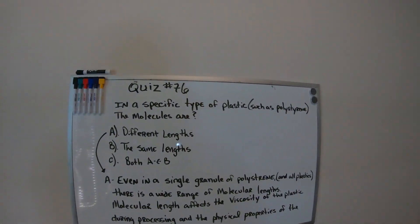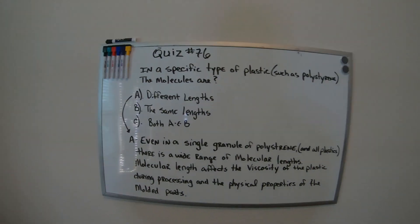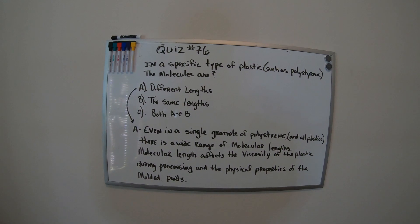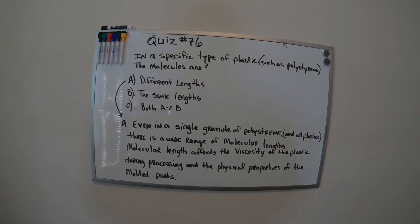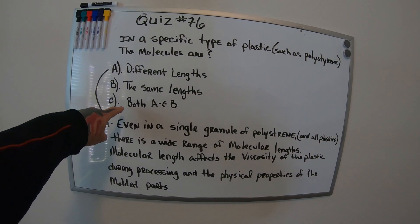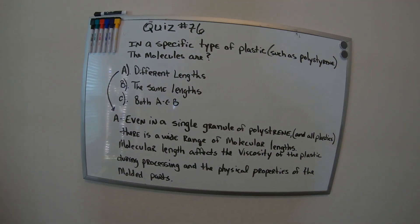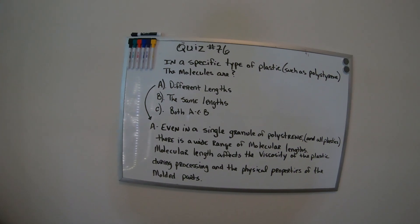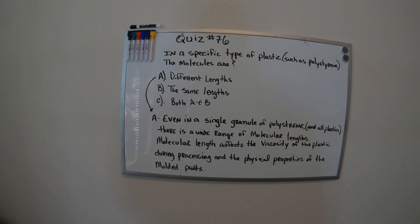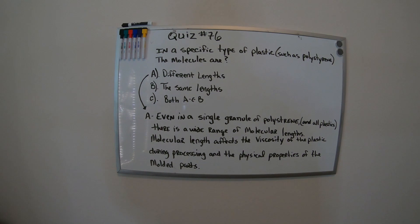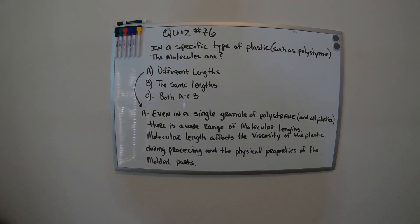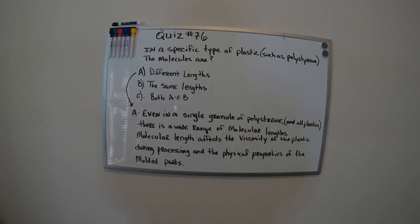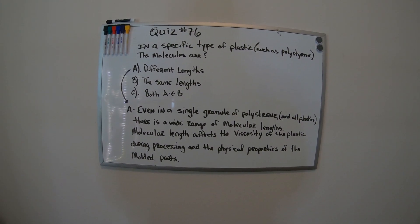Yesterday I wrote 73 on the board but it's actually 76. The question is: in a specific type of plastic such as polystyrene, the molecules are what? The trick answer is C — both A and B — but the correct answer is actually A: different lengths. They're never the same length.